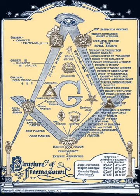In Scandinavia and the Nordic States, including Sweden, Norway, Iceland, Denmark, and Finland, Freemasonry exists mostly in the form of the Swedish Rite.